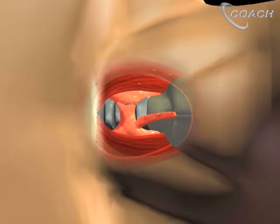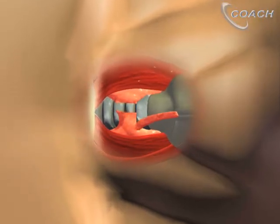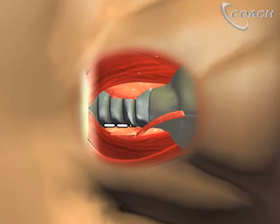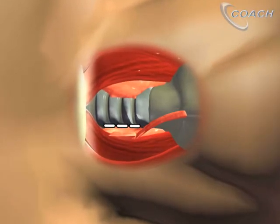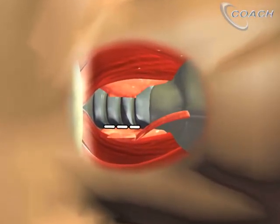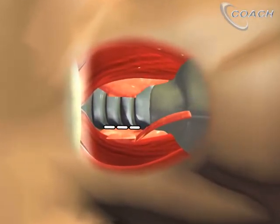Next we'll divide the tissue between the trachea and the thyroid, taking care not to go too posteriorly and certainly not past the middle of the trachea.